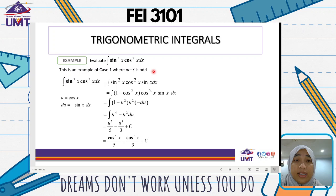For sine cubed x cos squared x dx, we separate it into sine squared x times cos squared x times sine x dx. Sine squared x is replaced by 1 minus cos squared x, so we have 1 minus cos squared x times cos squared x times sine x dx. Now let u equal cos x, so du equals negative sine x dx.